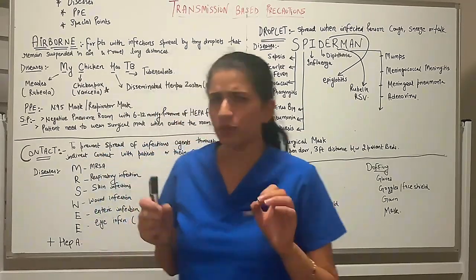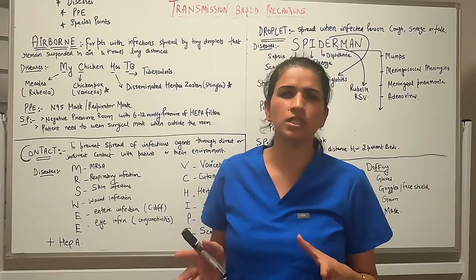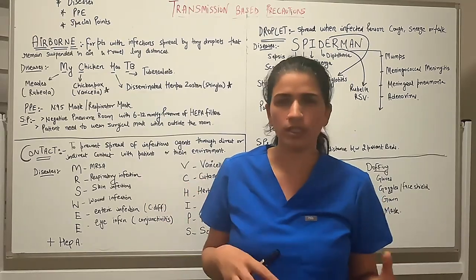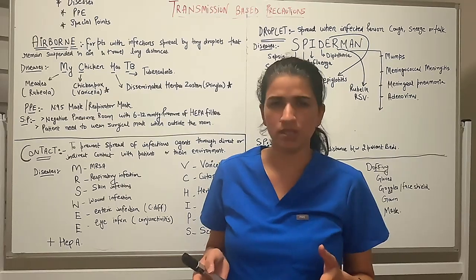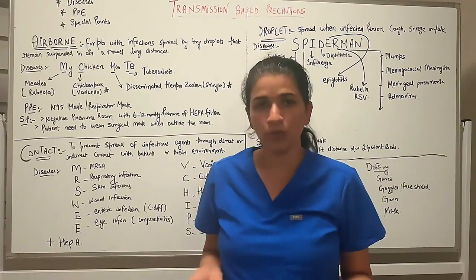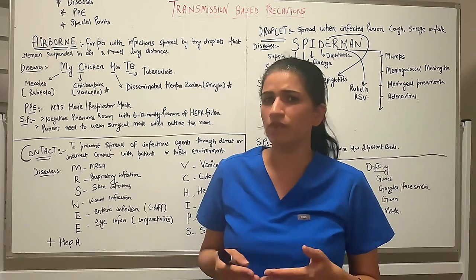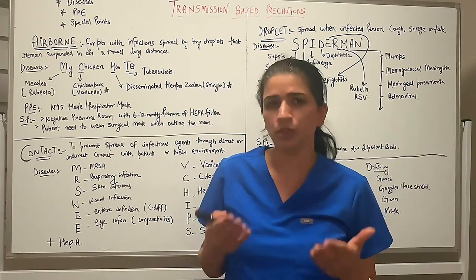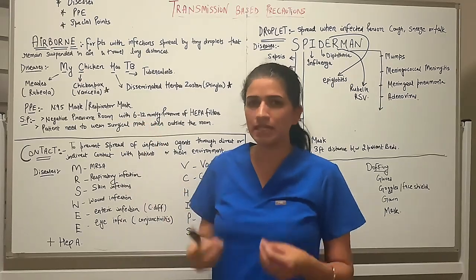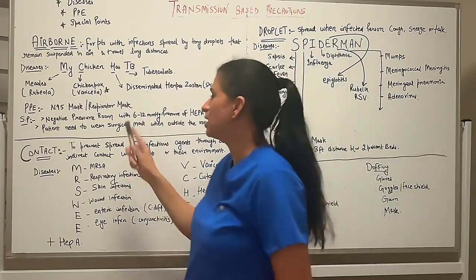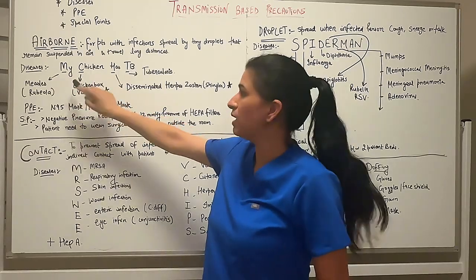The easy way to remember the diseases in each category is by using mnemonics. There are a lot of disease conditions across airborne, droplet, and contact precautions, so I highly recommend using mnemonics. If you have your own, feel free to use them. If you're new to this topic, I highly recommend using the ones I'll share here because they're easy to remember.